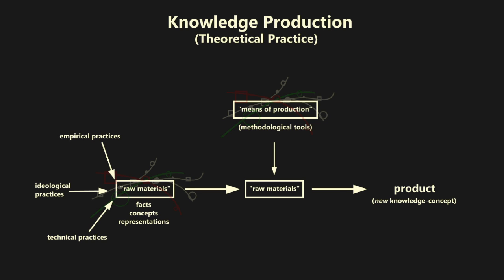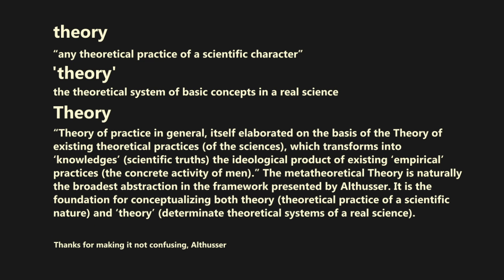The prehistory of a science is ideological, and Althusser argues there is an epistemological break after which ideology becomes science. However, for the sake of this analysis, Althusser takes up a position beyond the break within the constituted science, thereby referring to theory as any theoretical practice of a scientific character. This Althusser contrasts with theory in quotation marks, which refers to the theoretical system of basic concepts in a real science.